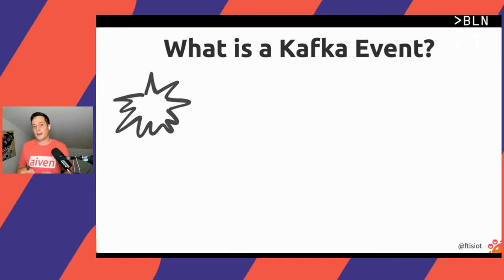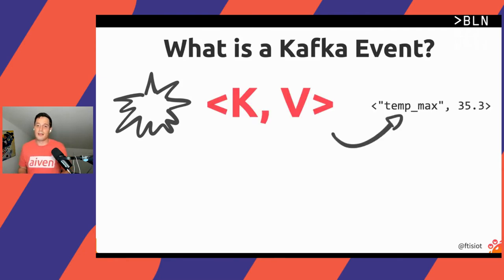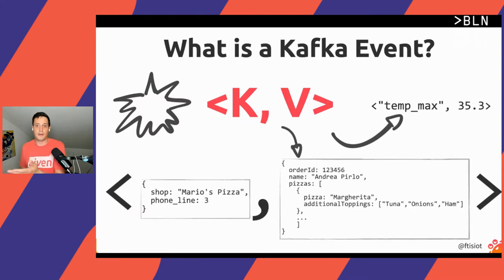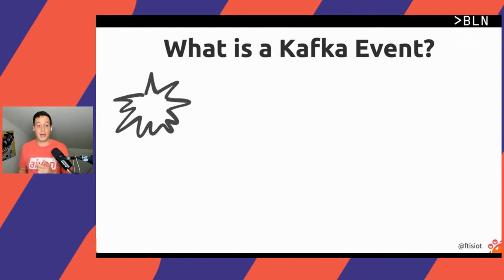Kafka is really simple when it defines an event. All you need to know is that an event in Kafka is composed by a key and a value. Kafka really doesn't care about what you put in the key or the value — for Kafka, it's just a series of bytes. You can start with really easy messages, for example storing the maximum temperature as the key and 35.3 as the value.